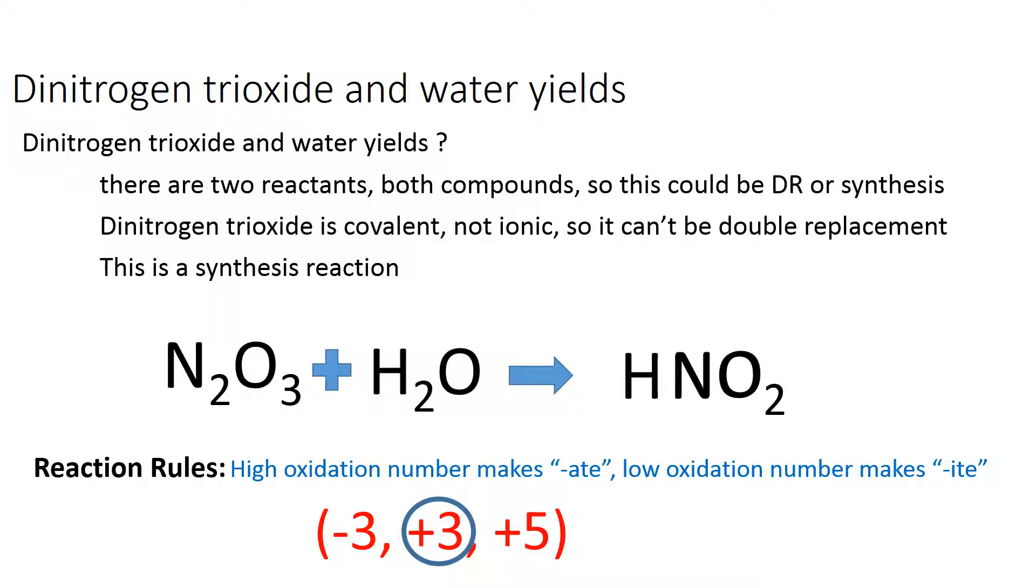That means this must be nitrite, which is NO2. We need to crisscross and make sure that the positives and negatives cancel out. Nitrite has a negative 1, and hydrogen is, of course, positive 1. So HNO2 is the correct formula.